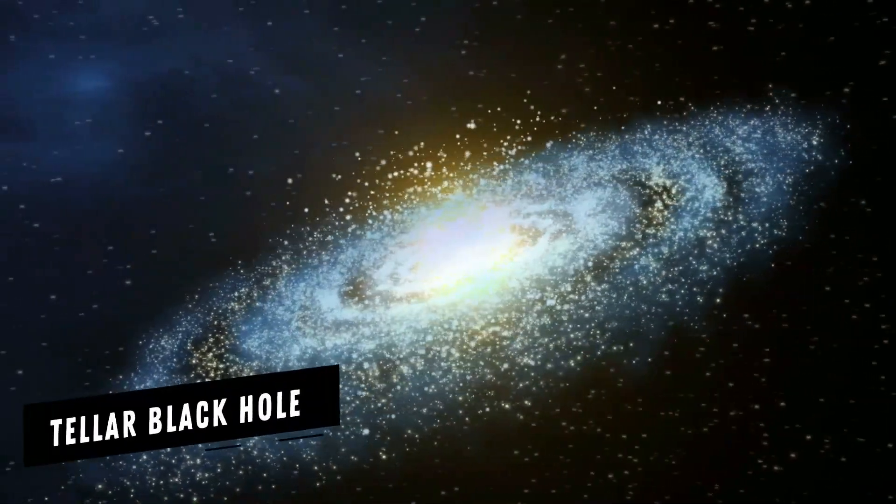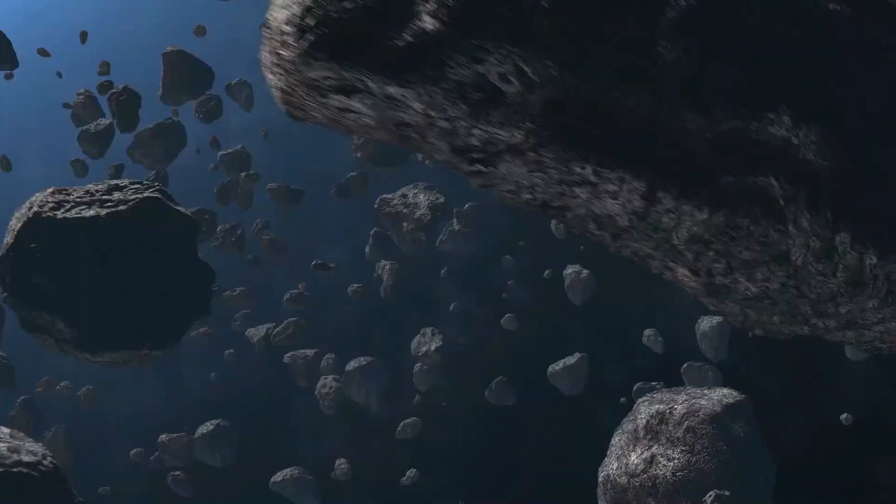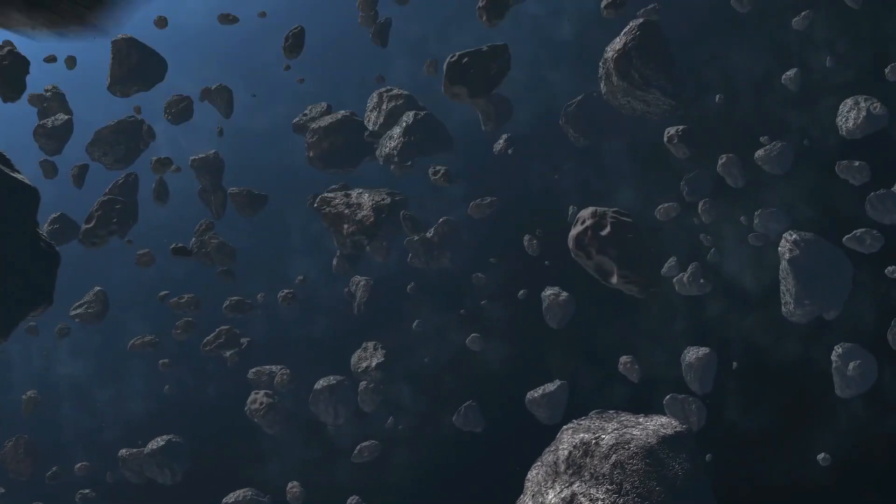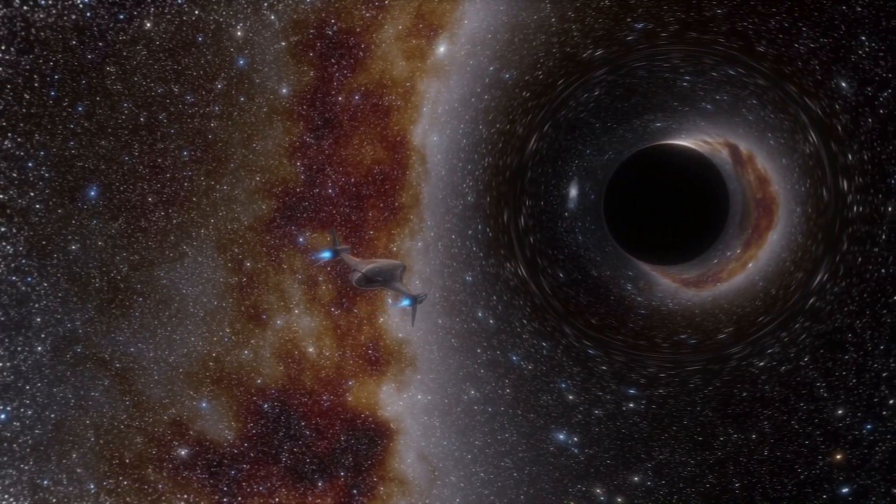Some black holes, known as stellar black holes, have about the amount of mass that very massive stars do. So just as objects can orbit massive stars without falling in, the same is true of black holes. You could happily orbit a black hole forever.